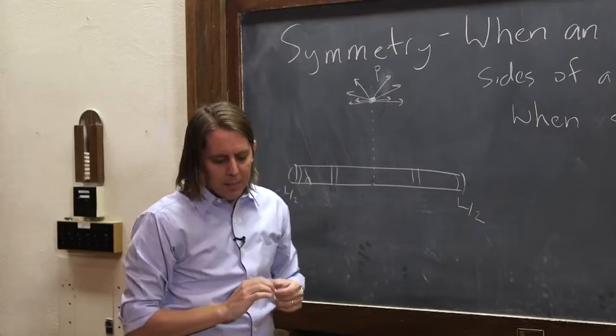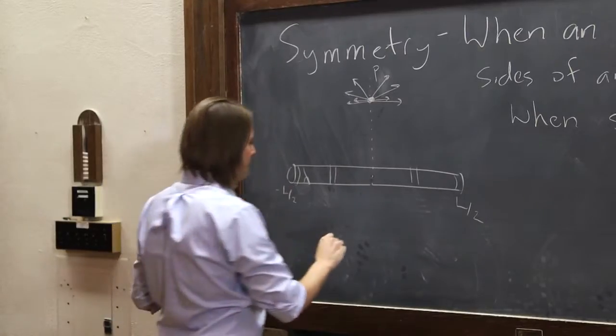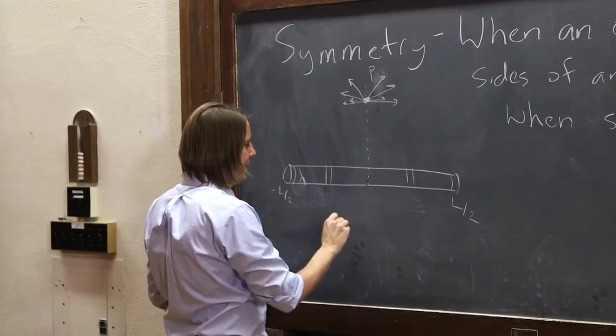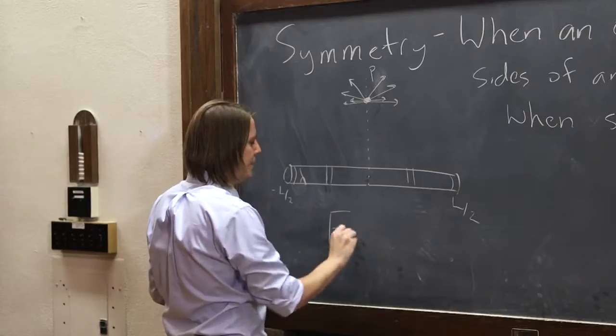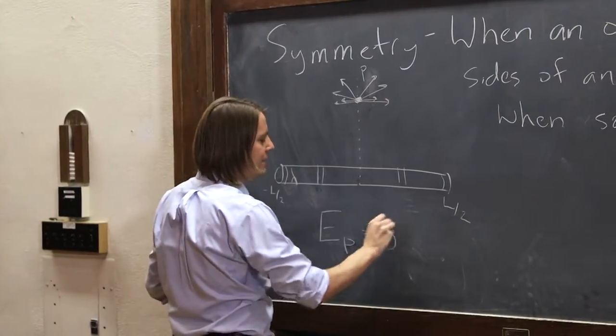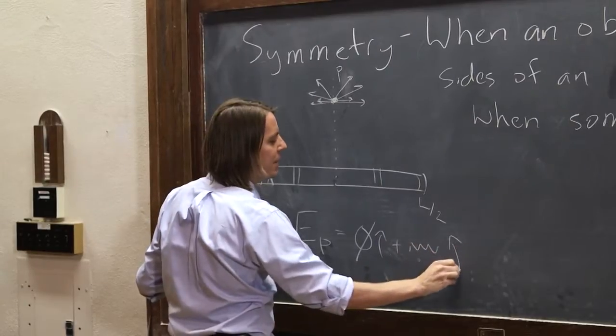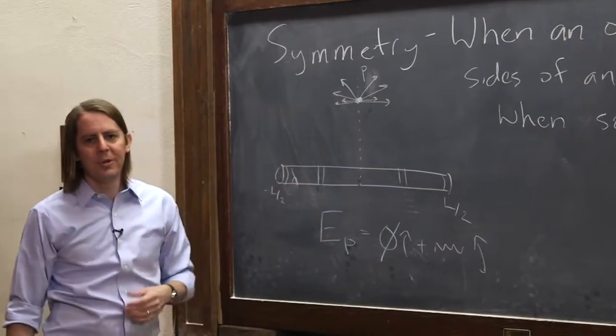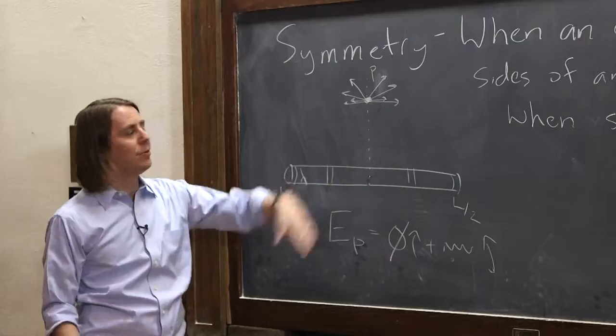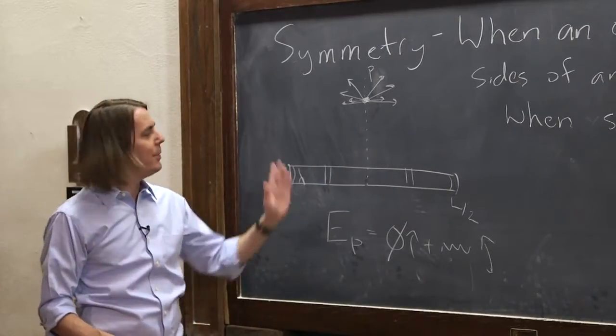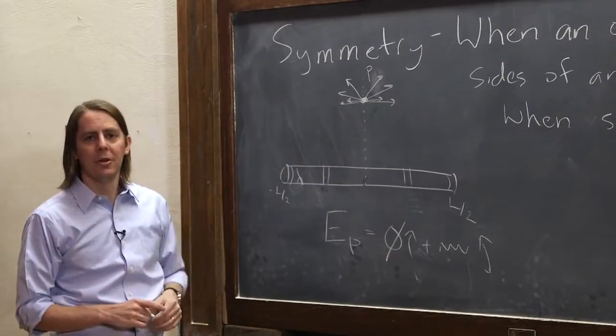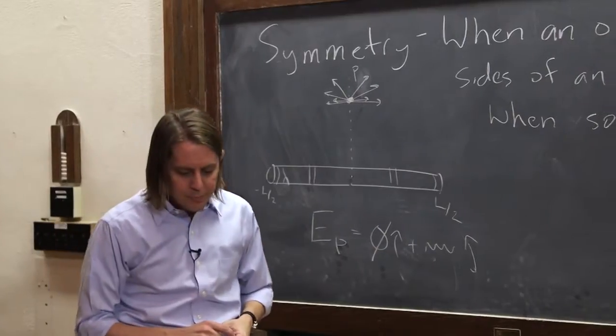So basically, by symmetry, we could have known ahead of time that E is going to have a zero on the i-hat. And then we would still have to solve the j-hat. So the problem could have been 50% easier. We could have just completely ignored the x-hat without even starting, just by looking at it and saying, oh, well, it's symmetric. Don't worry about the x-component.